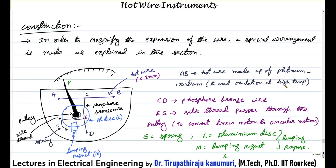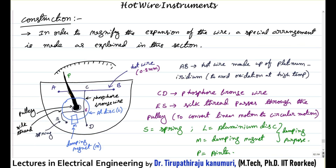Let us see the practical construction and how this is amplified. In order to magnify the expansion of a wire, a special arrangement is made with a scale, pointer, and pulley. From point A to point B, the hot wire is connected. This hot wire is made up of platinum iridium material, because this material is free from the problem of oxidation even at high temperatures.